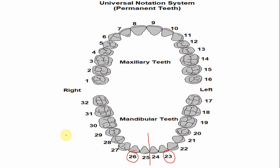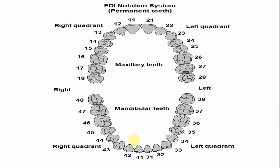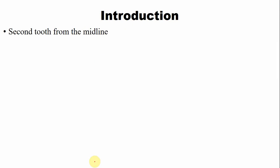In the universal numbering system, the right mandibular lateral incisor is number 26 and the left is number 23. In the Palmer notation system, the number of this tooth is 2, with a symbol drawn to distinguish left from right. In the FDI notation system, the left mandibular lateral incisor is 3-2 and the right mandibular lateral incisor is 4-2, where 4 is the quadrant number and 2 indicates it is the second tooth from the midline.